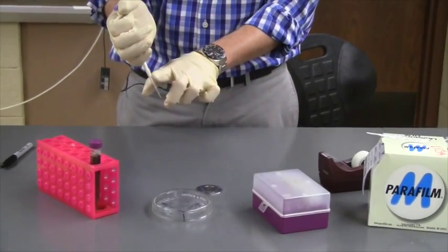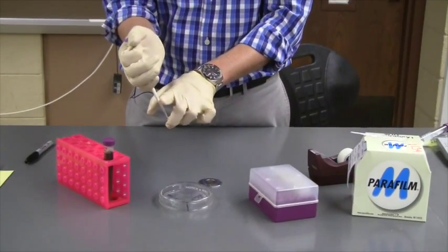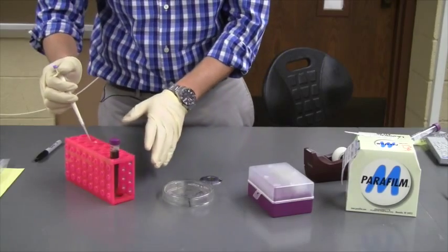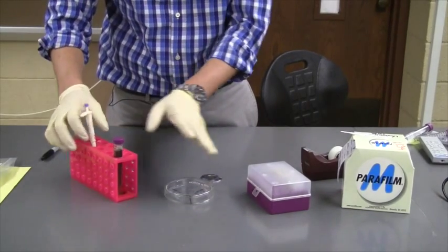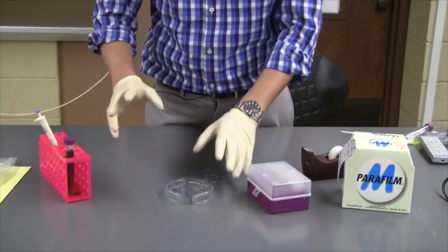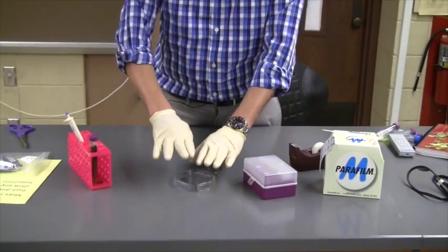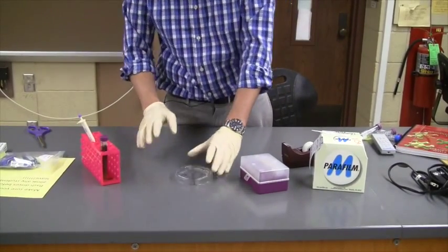Cover it back up. Normally I would dispose of this tip in a special container, but I'm going to move on to the next part here, so I'm just going to set this aside. Normally you'd throw that away. Then we're going to open up the lid and put a couple of glass beads in here.